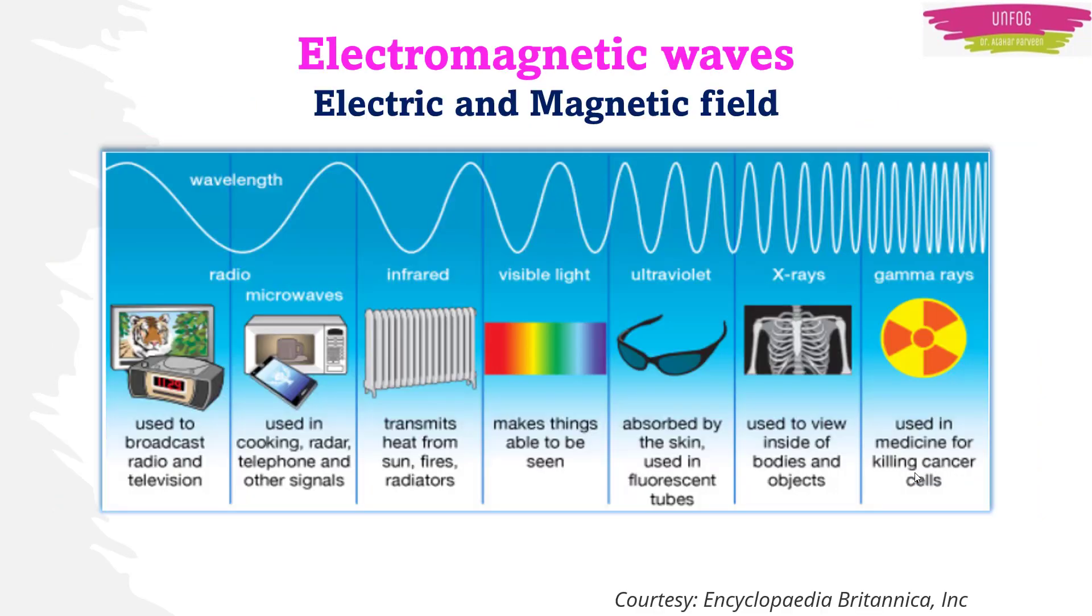Now, before moving towards radiation, we need to know a little about electromagnetic waves. Electromagnetic waves are a form of energy waves that have both an electric and magnetic field. They are classified according to their frequency. The different types of waves have different uses and functions in our everyday lives.